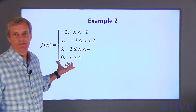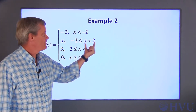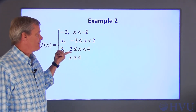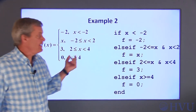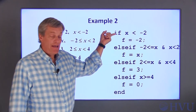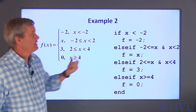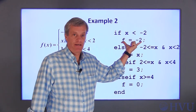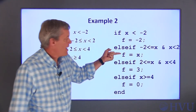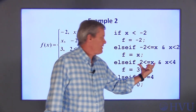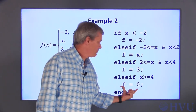This function has four conditions. The value of the function is negative 2 if x is less than negative 2; it's x if x is greater than or equal to negative 2 and less than 2; it's 3 if x is greater than or equal to 2 but less than 4; and finally it's 0 if x is greater than or equal to 4. I can implement this function with an IF construction using the conditions exactly as presented in the mathematical formula. So if x is less than negative 2, I set f equal to negative 2. If x is between negative 2 and 2, I do this and skip out of the block. If x is between 2 and 4, I set f equal to 3. Finally, if x is greater than or equal to 4, I set f equal to 0.